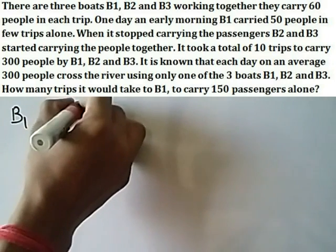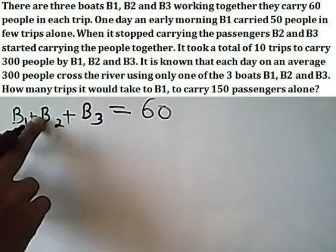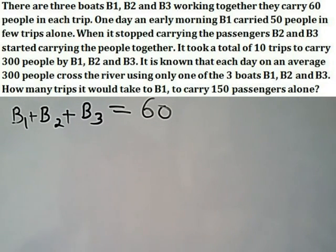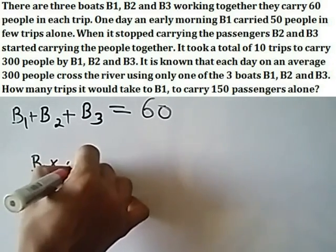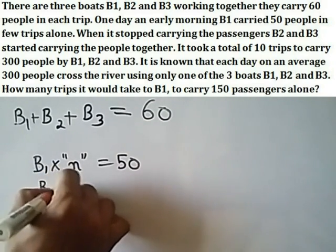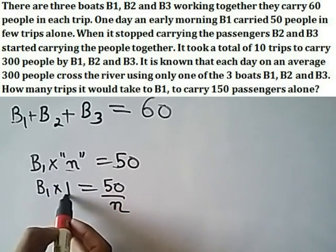There are three boats B1, B2 and B3. According to the question, let us suppose B1 took N trips, and in those N trips 50 people were carried. So in one trip, B1 carried 50/N people. If B1 carried 50 people in N trips, then in one trip it carried 50 divided by N.